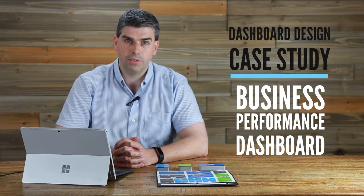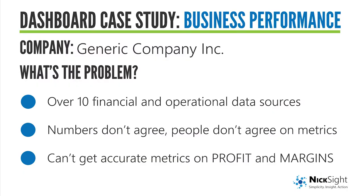So that's what we're going to be looking at today for this exercise. In this case study, we're looking at the challenges faced by Generic Company Incorporated. Like any business, they live by their margins, though it takes weeks to pull together an accurate report for the management meetings. They had three primary problems: over 10 different data sources, their numbers didn't agree, people didn't agree on the metrics, and fundamentally they couldn't see their profit and margins.